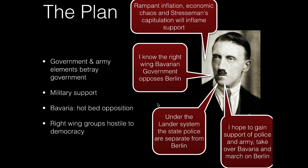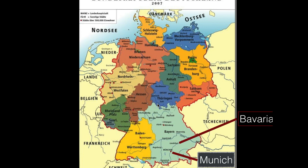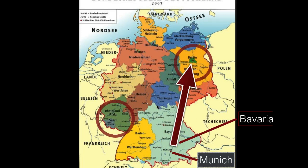With the support of the police and army, Hitler hoped to take over Bavaria and then march on Berlin for a national takeover. Munich is the state capital of Bavaria. The Rhineland situation gave Hitler hope - Stresemann's capitulation over the Ruhr inspired him to stage a triumphant march from Munich towards Berlin to take over the national government, just as Mussolini had done in 1922.